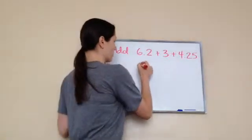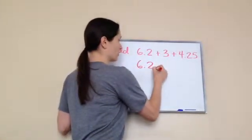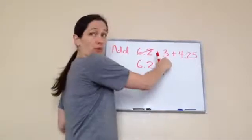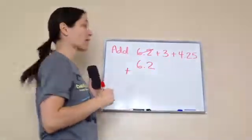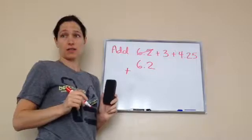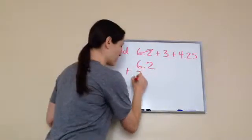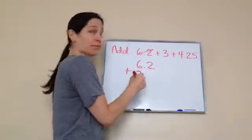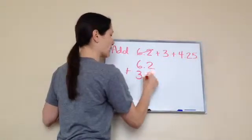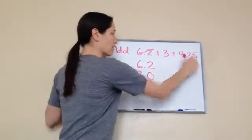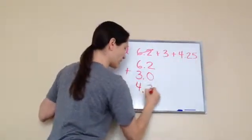So watch what I'm going to do. 6.2, okay? I'm done with that one. Now I'm going to add this 3. Where's the decimal, even if I can't see it? After the 3. Very good. So I'm going to put the decimal and line it up. And you can put a 0 there. Yeah, I can put a 0 there. Very good. Then I'm going to go 4.25.